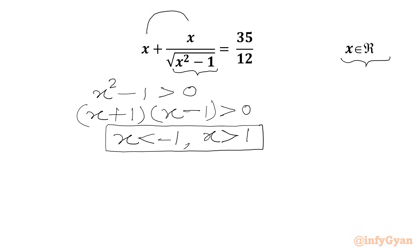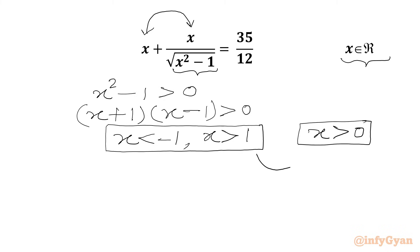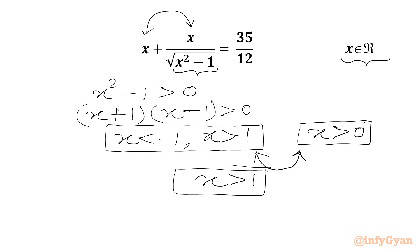Now from the condition on x: once we take x common from the LHS, we can see the RHS is positive, so LHS must be positive, meaning x must be positive. Taking the intersection of these two conditions, our answer must be x > 1 for x to be real.